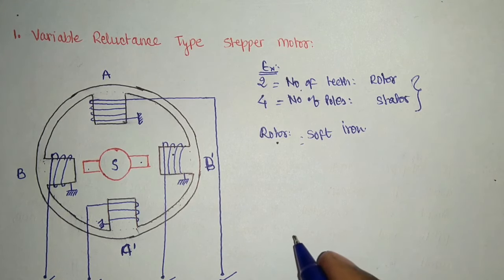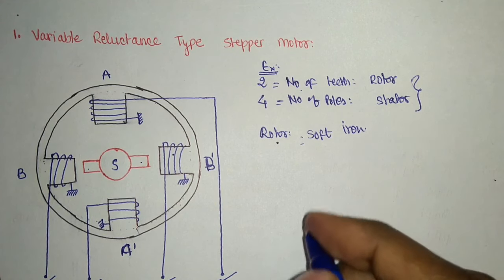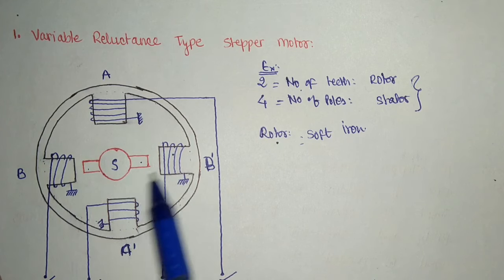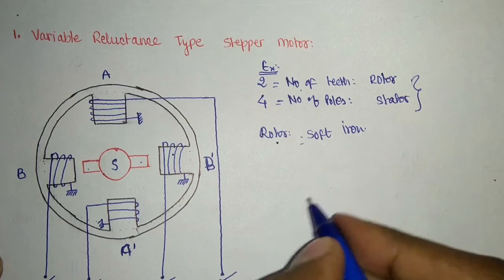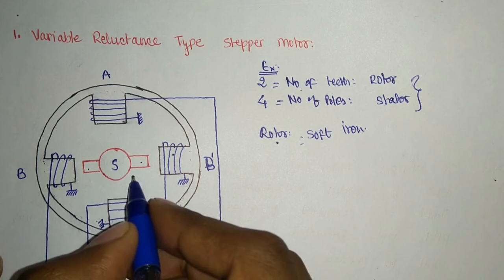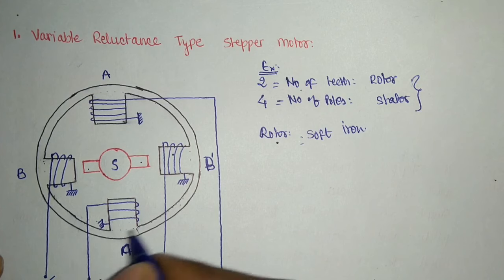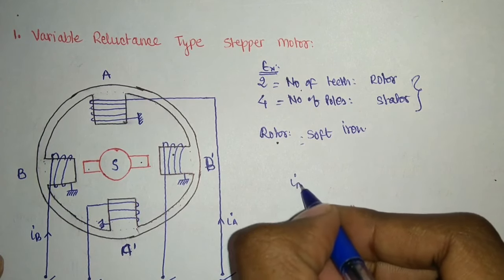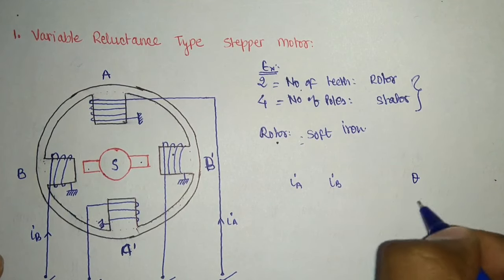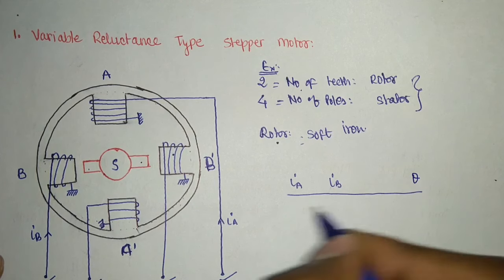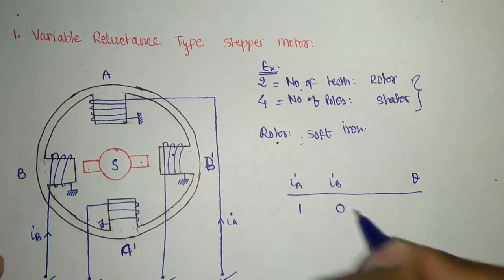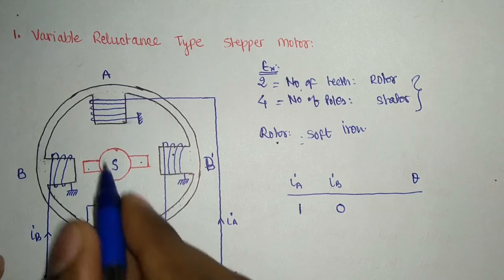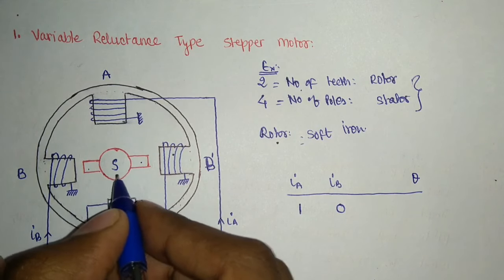The number of poles and number of teeth will basically determine the full step angle and half step angle. Let's say there are two phases, A and B, so we have two coils: A A-dash and B B-dash. Initially let's say the rotor is in a given position. I will draw a logic table with current I_A and current I_B showing what the position theta of the rotor will be. When I_A is 1 and I_B is zero, this coil A A-dash is magnetized, so the iron core will get aligned along it.